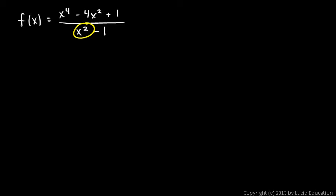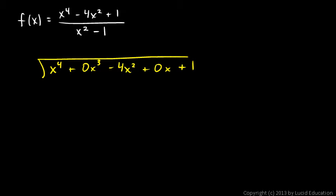Take note of the x to the fourth in the numerator and x squared in the denominator. Remember the fraction bar means divide, so let's actually set this up and do this division. To set up the polynomial long division, we need x to the fourth plus 0x cubed—don't forget the zero coefficients—minus 4x squared plus 0x plus 1, and that will be divided by x squared minus 1.